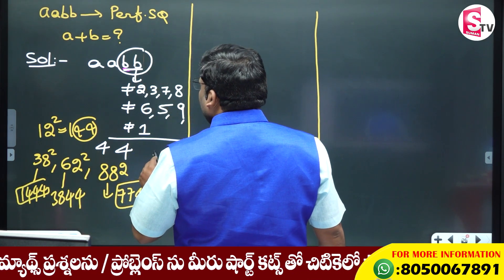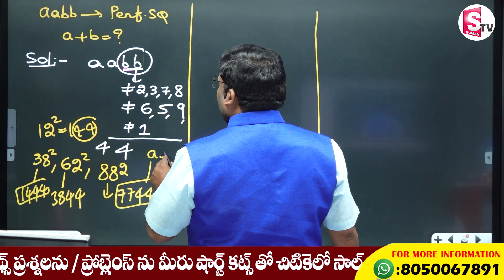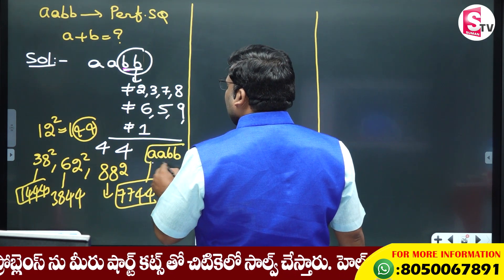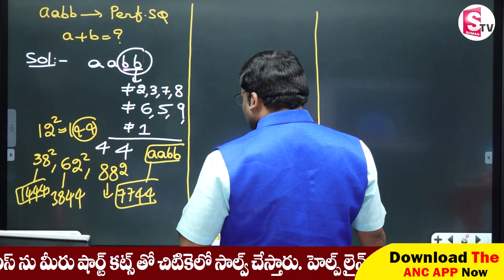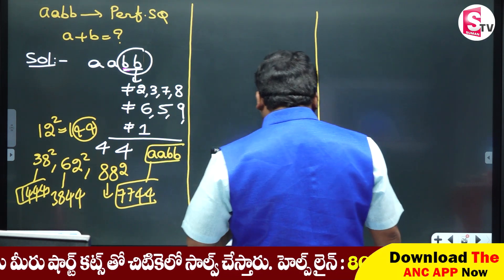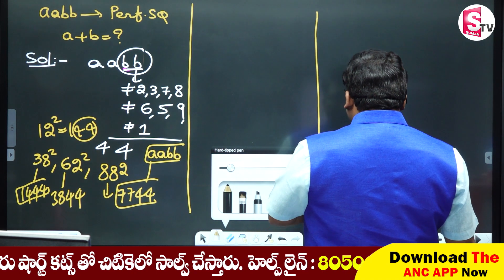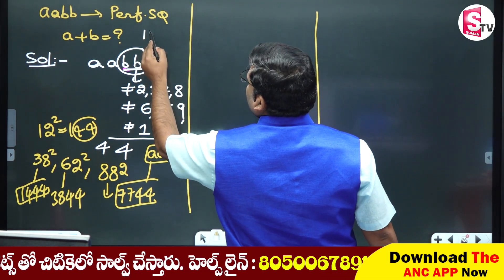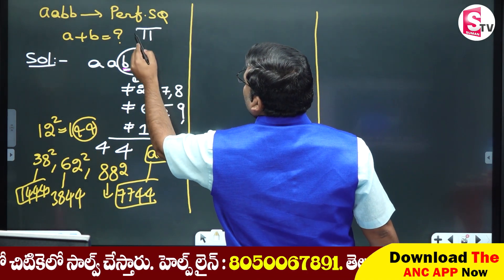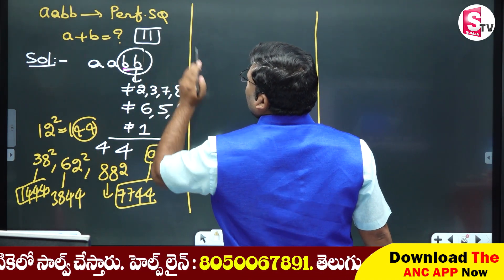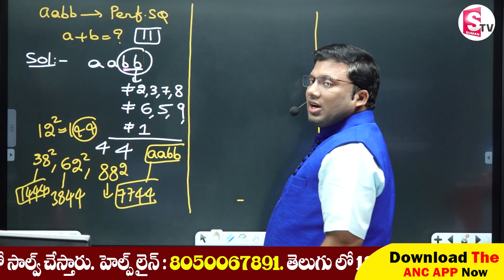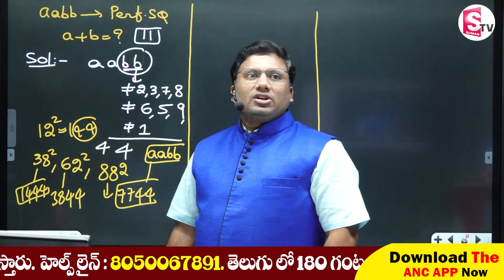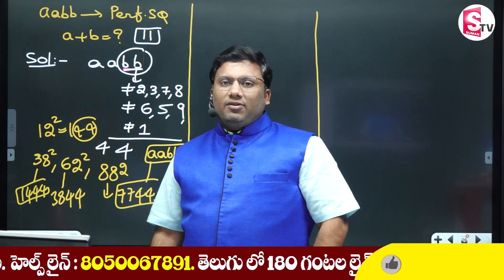This number uses a formula — the AABB formula. So A plus B value is equal to A plus B value. AABB is equal to A plus B value.